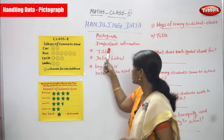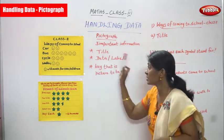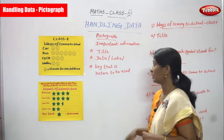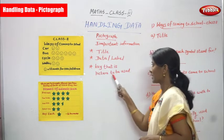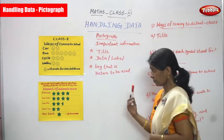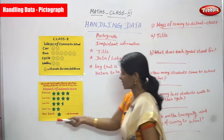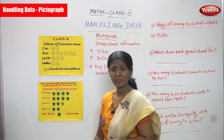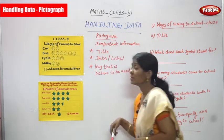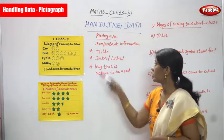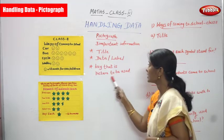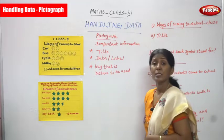What is the important information in a pictograph? First, it gives a title. Second is data or label, that is the picture. Third is the key — that is the picture to be used. These are the three important pieces of information given by a pictograph: title, data or label, and key.